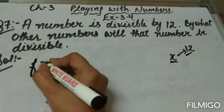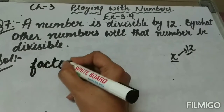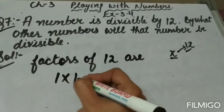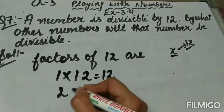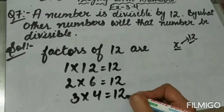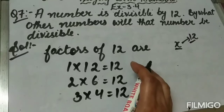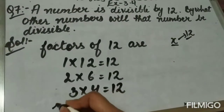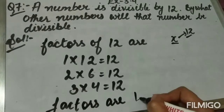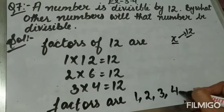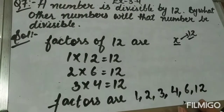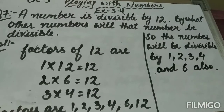The factors of 12 are: 1×12=12, 2×6=12, 3×4=12, 4×3=12 — repetition has started so we stop here. So the factors of 12 are 1, 2, 3, 4, 6, and 12.